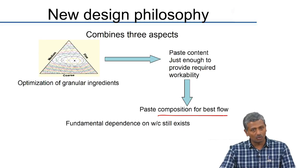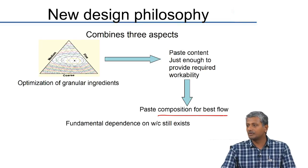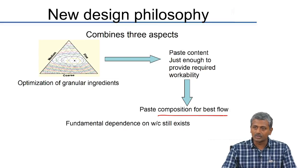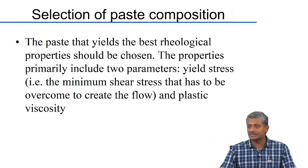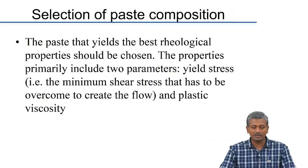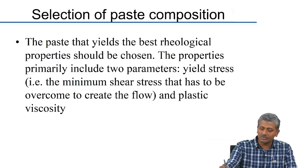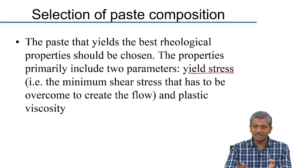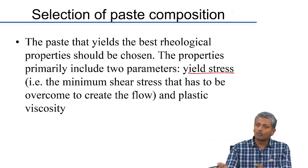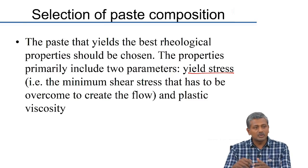Rheology is essentially the science of flow of matter. Rheology of concrete is gaining a lot of significance, primarily from the aspect of looking at flowable concretes. The rheological parameters essentially consist of two components. One is the yield stress — the minimum shear stress that needs to be overcome to initiate flow. When you pour concrete into the formwork, if it is conventional vibrated concrete, you insert a vibrator. The vibrator overcomes the initial yield stress present in the material and makes it flow and fill up the formwork.